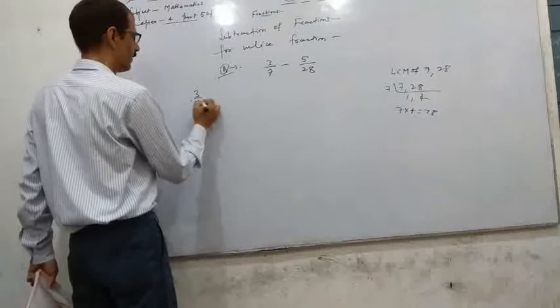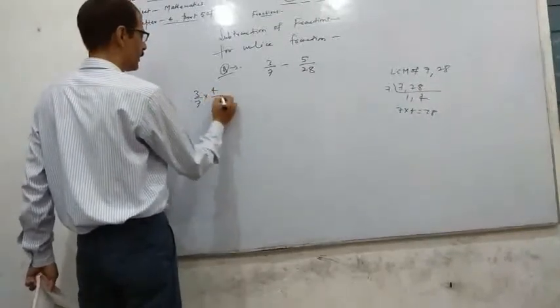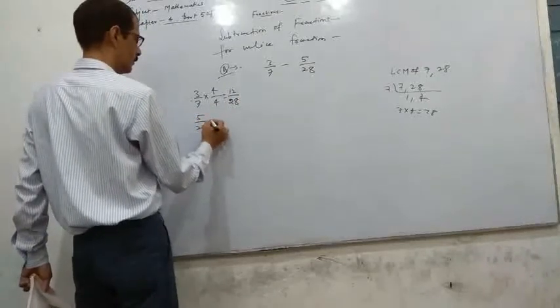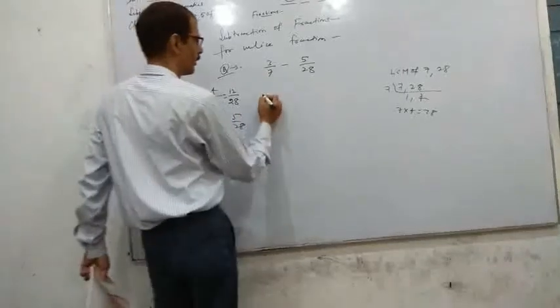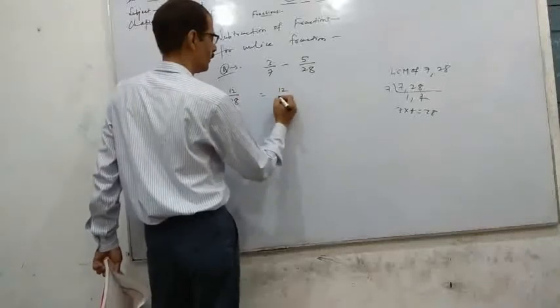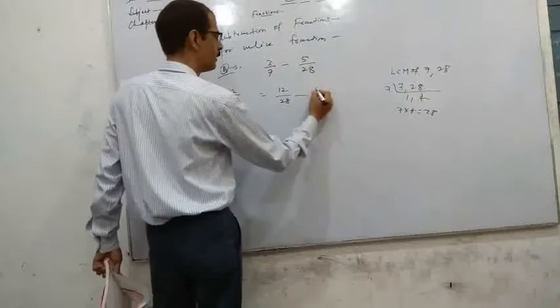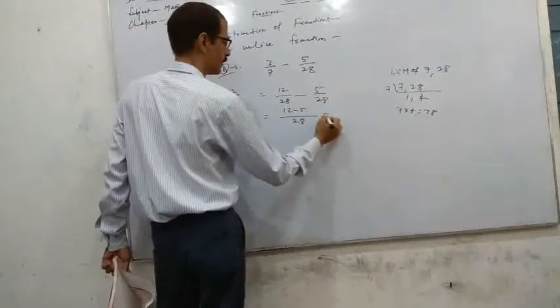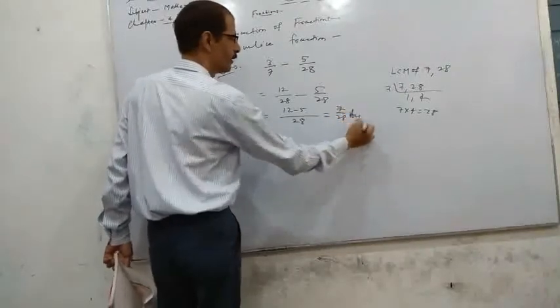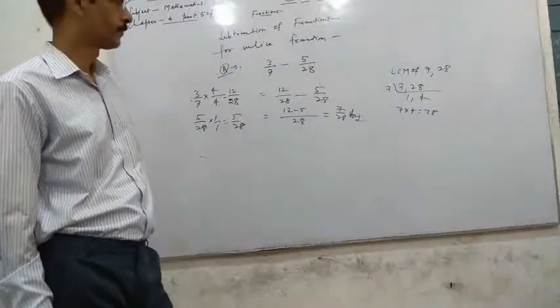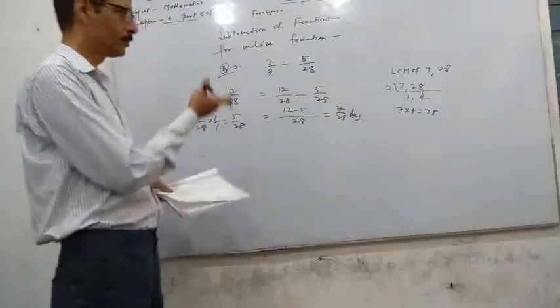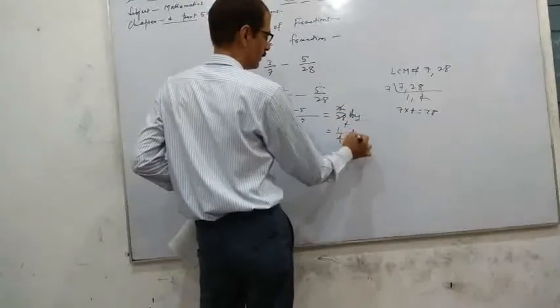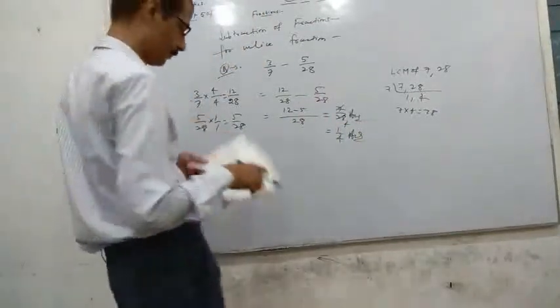Therefore you can write for 3 by 7, it becomes 12 by 28 minus 5 by 28. Here is the common denominator 28, so 12 minus 5 equals 7 by 28. This is the answer for the given unlike fraction. You can also divide 7 by 28 to get 1 by 4, which is the simplest form.